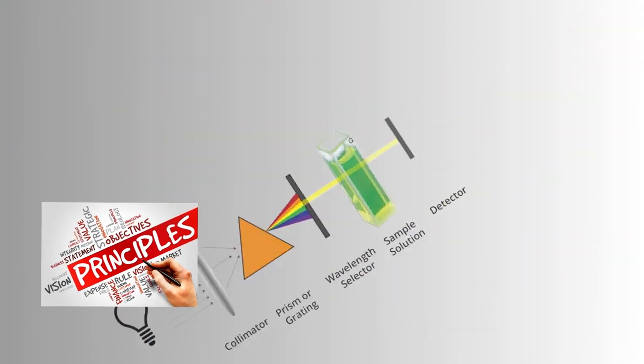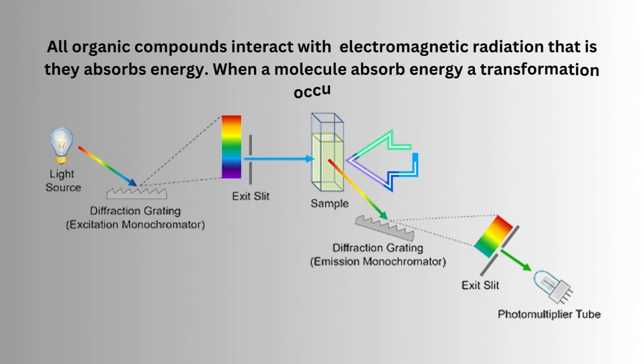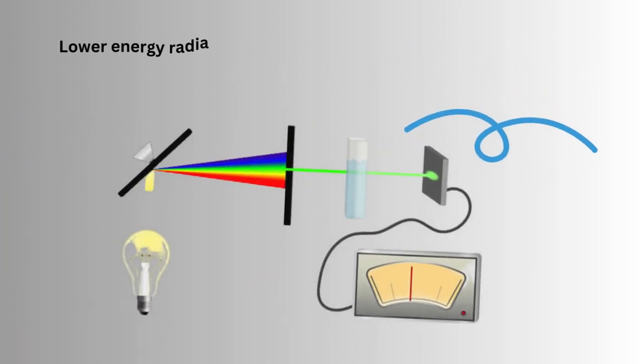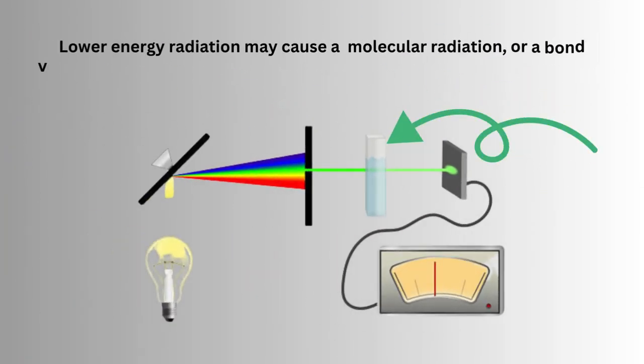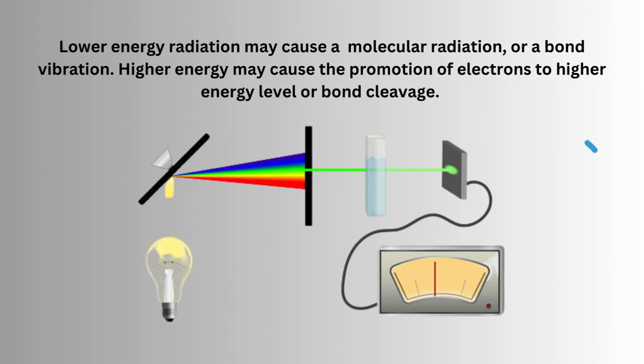Principle of spectroscopy. All organic compounds interact with electromagnetic radiation, that is, they absorb energy. When a molecule absorbs energy, a transformation occurs. Lower energy radiation may cause molecular rotation or bond vibration. Higher energy may cause the promotion of electrons to higher energy levels or bond cleavage.